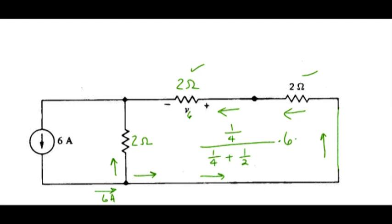Once we have that, we multiply by 2 ohms to get our voltage and find out that V6 is 4 volts. Let me go ahead and restore the original circuit for the next part.